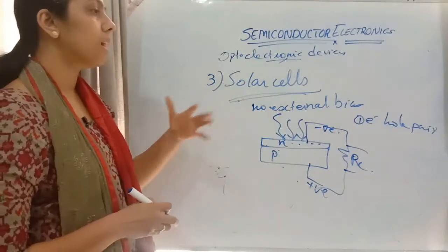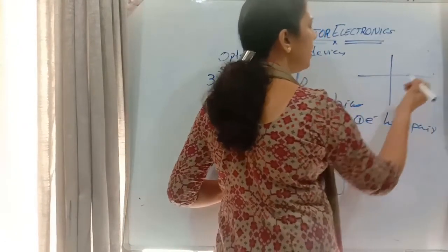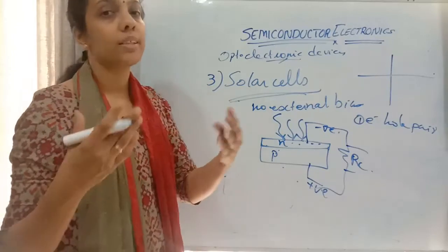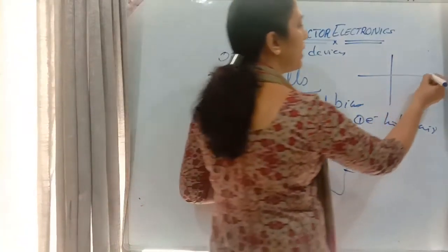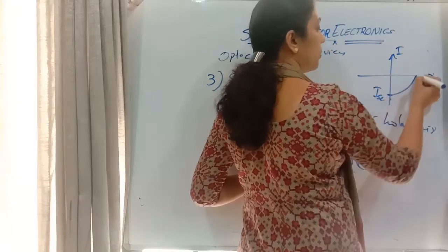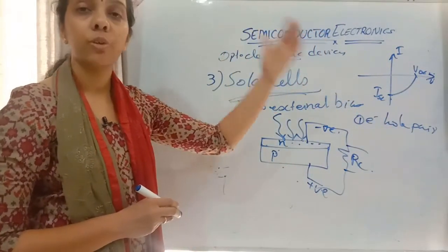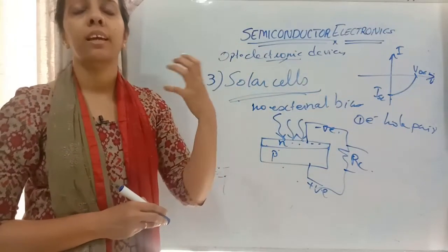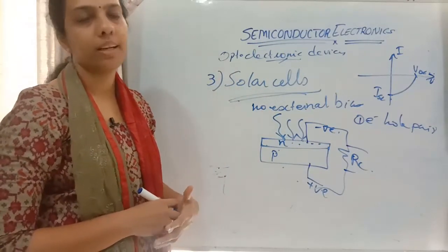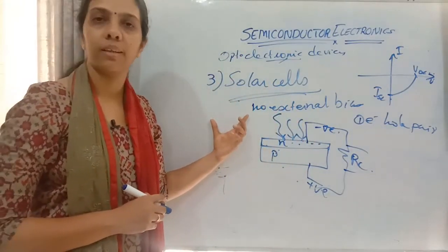Since no current is drawn from an external source for the solar cell to function, the VI characteristic of the solar cell is in the fourth quadrant. The short-circuit current and open-circuit voltage are represented there. The solar cell gives out electric current without any external biasing.